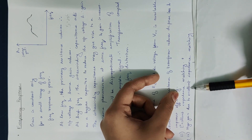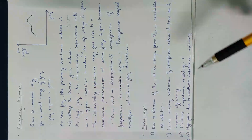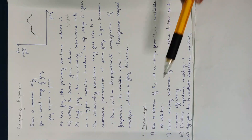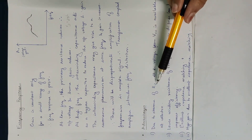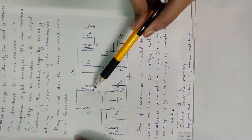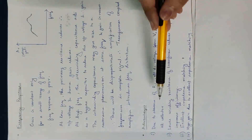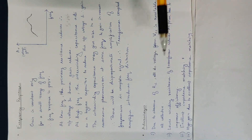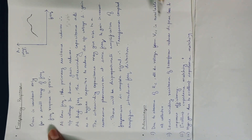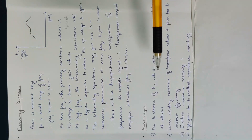High gain is achieved due to excellent impedance matching. Also, due to the absence of collector resistance RC, all DC voltage from Vcc is available at the collector, which increases the collector voltage swing.